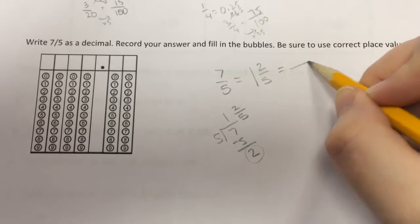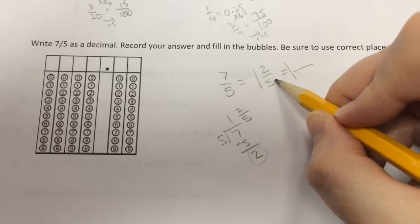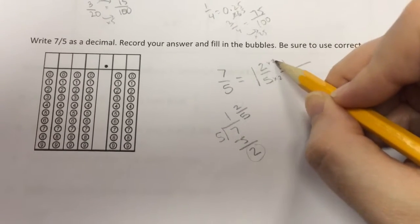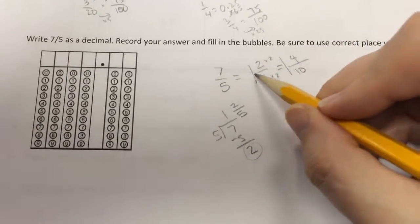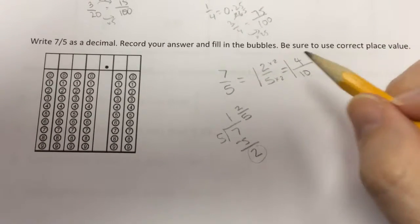I'm looking for a denominator that's either ten or a hundred, and we're going to start with ten. So five times two gives me ten. So two times two gives me four. So one and two-fifths is the same as one and four-tenths. One and four-tenths.